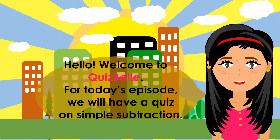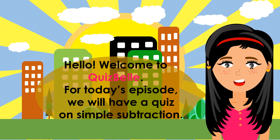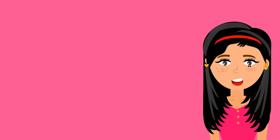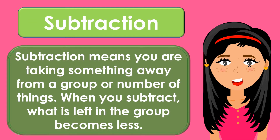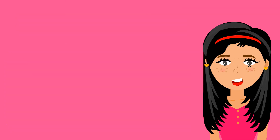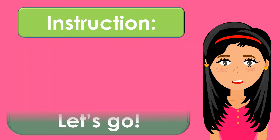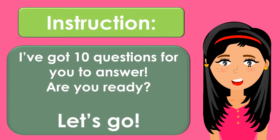Hello! Welcome to Quizbell. For today's episode, we will have a quiz on simple subtraction. Subtraction means you are taking something away from a group or number of things. When you subtract, what is left in the group becomes less. Count the two sets of objects in each item. Subtract the subtrahend, or the second number, from the minuend, or the first number. I've got ten questions for you to answer. Are you ready? Let's go!